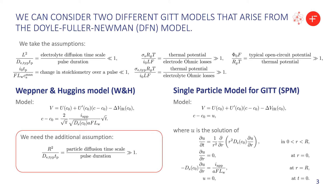On the other hand, if we don't take that extra assumption, we get a very similar model — a single particle type model — where the variation in concentration u comes from solving the diffusion equation in the particle. The interesting thing is that the diffusion coefficient is evaluated at c0, the initial concentration at the pulse. This means the diffusion coefficient can change across pulses but within a pulse we take it to be constant. That's why this technique using linear diffusion can estimate variable diffusion coefficients.